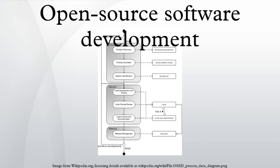Open source software development is the process by which open source software, or similar software whose source code is publicly available, is developed. These are software products available with their source code under an open source license to study, change, and improve their design.